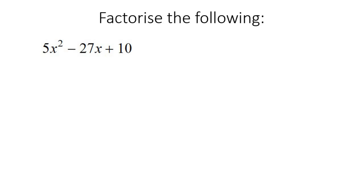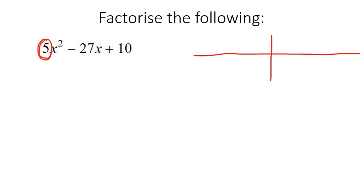It's definitely a trinomial, but you can't take out a common factor. There is no common number that can go into 5, 27, and 10. So what we do is make a little grid. This is weird at first. Normally we used to start with the last number, but now we're going to look at the first number and put all the factors of 5: 1 times 5, but also the reverse, 5 times 1.